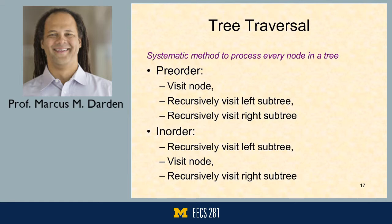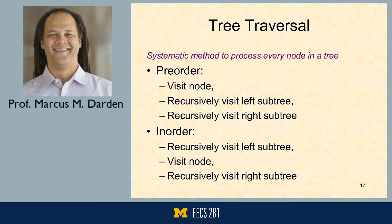Tree traversal is a systematic way to process every node in a tree — for searching, output, or other purposes. We'll talk about four particular tree traversals: pre-order, in-order, and post-order (all recursive), and level-order. The names pre-order, in-order, and post-order refer to when the node itself is visited relative to its subtrees.